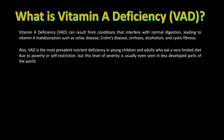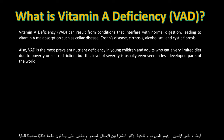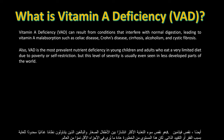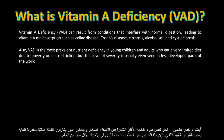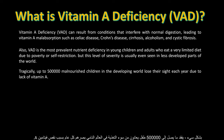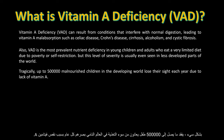Also, VAD is the most prevalent nutrient deficiency in young children and adults who eat a very limited diet due to poverty or self-restriction, but this level of severity is usually seen in less developed parts of the world. Tragically, up to 500,000 malnourished children in the developing world lose their sight each year due to lack of vitamin A.